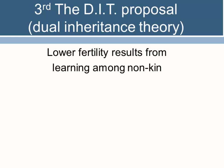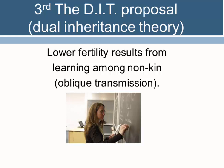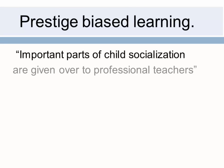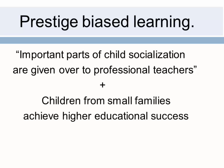The third hypothesis comes from dual inheritance theory, which emphasizes the interplay of culture and genes. Dual inheritance theorists argue that lower fertility results from living and learning among non-kin — what they call oblique transmission. Education is central in modern industrial societies, and children learn from non-parents. When children from small families achieve higher educational success and emulate their teachers through prestige-bias learning, they too end up with smaller families and higher incomes.